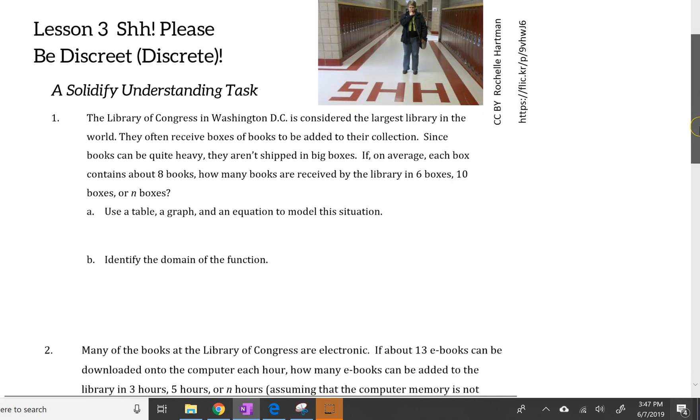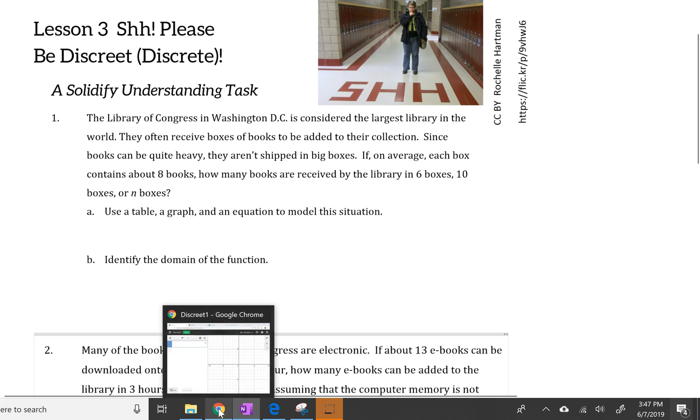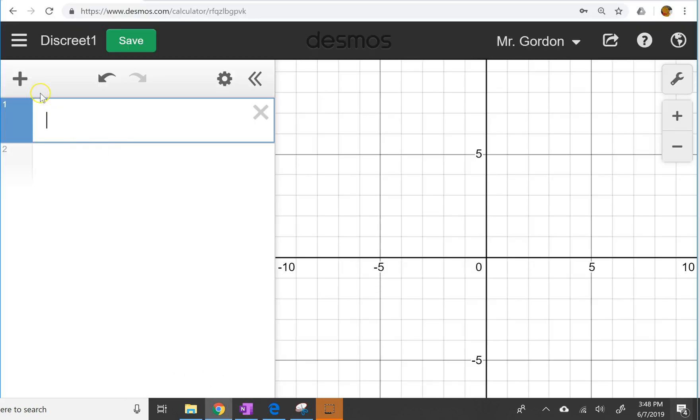So when we look at lesson 3, problem 1, it talks about the Library of Congress receiving books, and they're receiving 8 books per box. So that's because the books they get are fairly heavy, so you don't want to overload the boxes. But we want to make a table, graph, and an equation. So I'm going to make the table in Desmos.